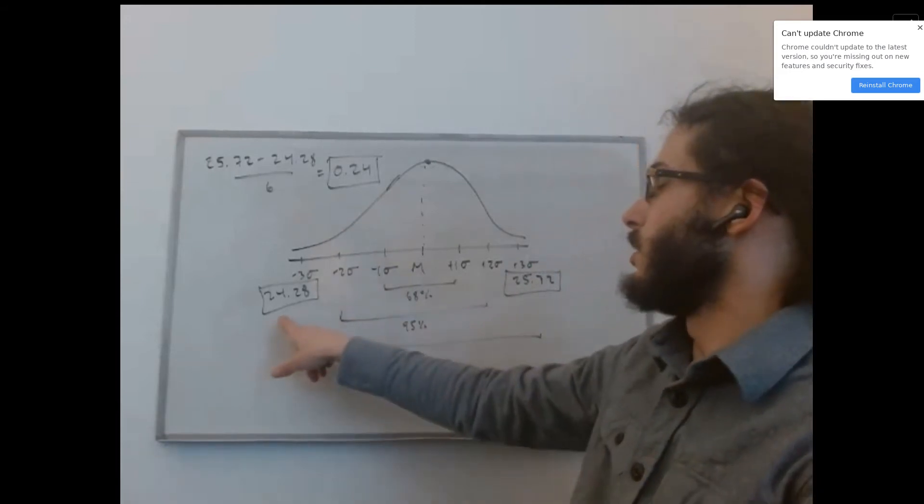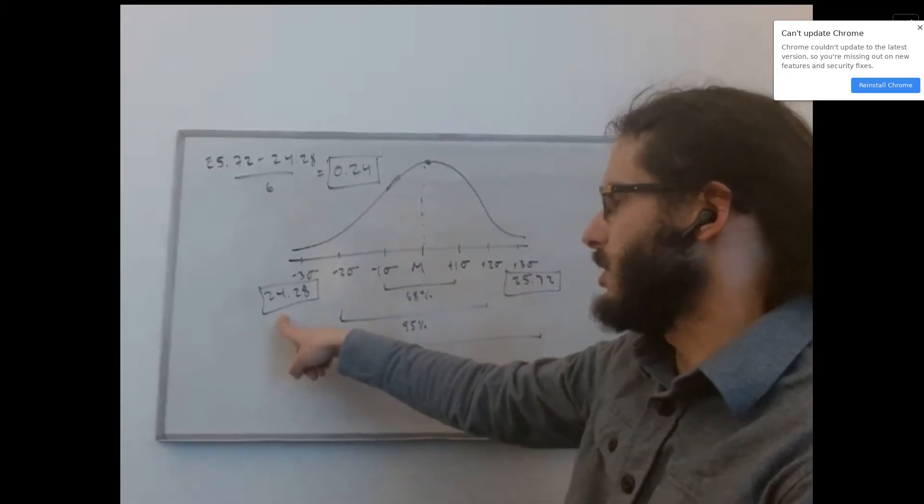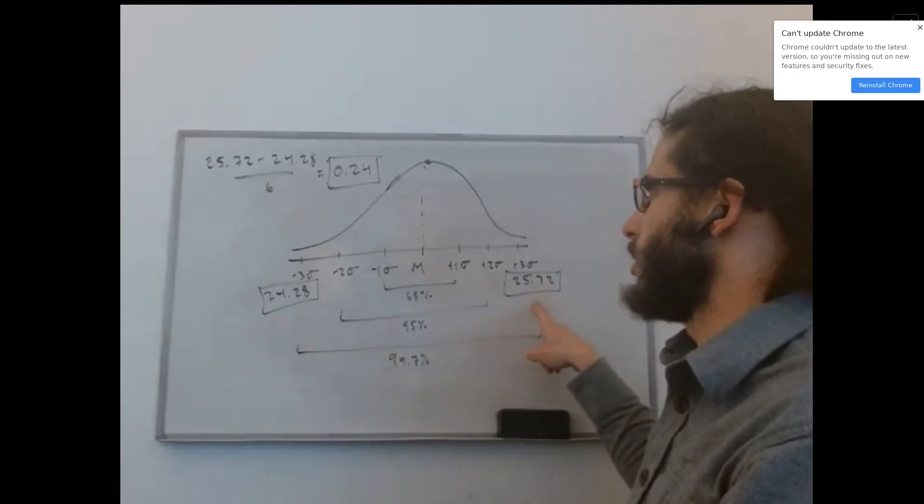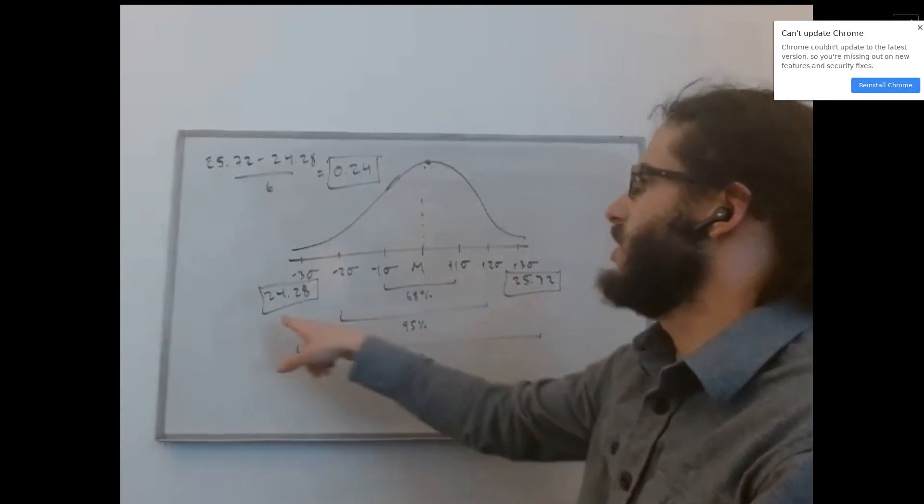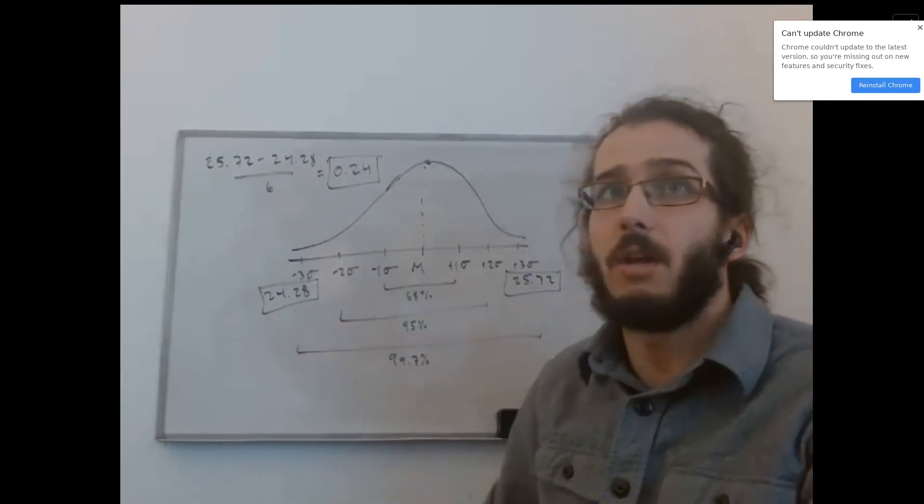Now, if the low end is three standard deviations below the mean and the high end is three standard deviations above the mean, then the difference between these two numbers must be equal to six times the standard deviation of the data set.